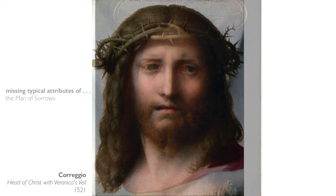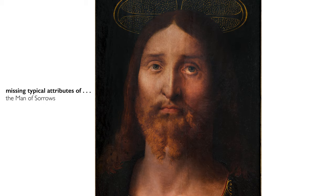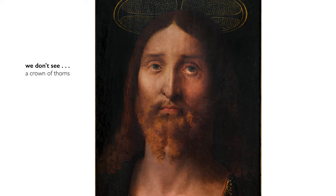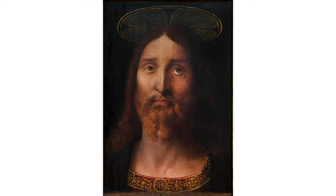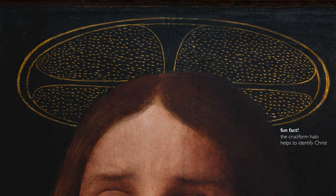So why this painting is hard to identify is that we don't see any of the other attributes we typically associate with the man of sorrows or Jesus as the savior of the world. We don't see a crown of thorns. We don't see any blood. We don't see the edges of the veil. We don't see Christ making a gesture of blessing. What we're really seeing is a bust-length image of Jesus with a halo around his head.